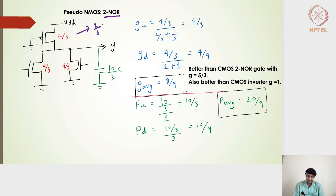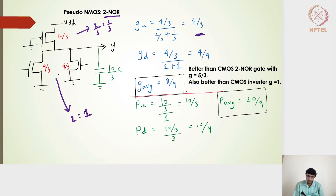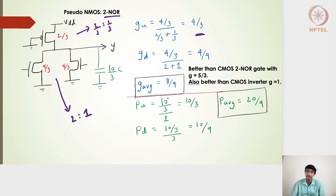The benchmark inverter for the pull-up side is 2/3 : 1/3, and for the pull-down circuit it is 2:1. The logical effort for the going-up signal is (4/3) ÷ (2/3 + 1/3) = 4/3. The logical effort for the going-down signal is (4/3) ÷ (2 + 1) = 4/9. The average logical effort is 8/9, which is much better than the 5/3 value seen in regular CMOS for the two-input NOR gate — in fact better than even the inverter.